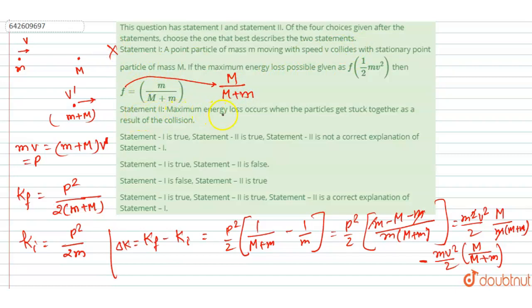Now see the second statement: maximum loss occurs when the particles stick together. So when they stick to each other, the velocity of separation will become zero. So if the velocity of separation becomes zero, then collision will be inelastic.